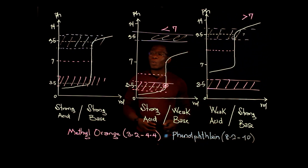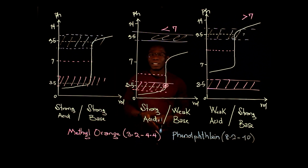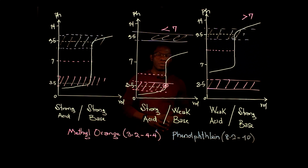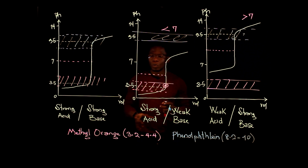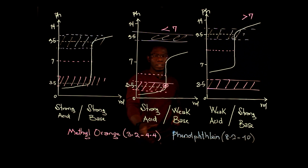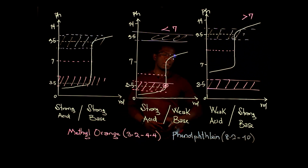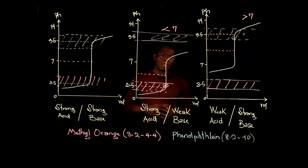In summary: when we have a strong acid reacting with a strong base, there's a wide range of indicators that we can use. When we have a strong acid reacting with a weak base, the indicators we can use are limited to those with a low pH range, such as methyl orange. And for a weak acid reacting with a strong base, we need to use an indicator with a high pH range, such as phenolphthalein.